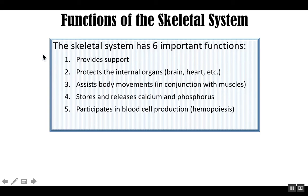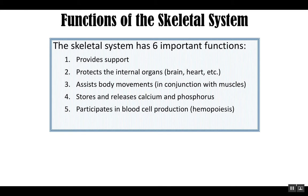Another important topic is the production of blood cells. We cover blood more in A&P 2, but you can appreciate our bones in this process called hemopoiesis. Hemopoiesis is the production of blood cells. We produce red blood cells, white blood cells, and platelets in tissue called red bone marrow.